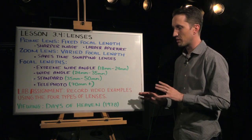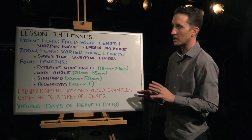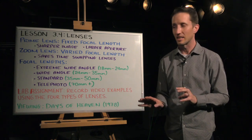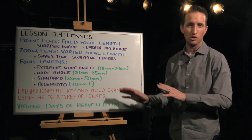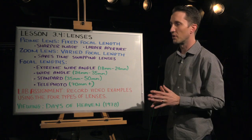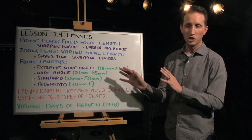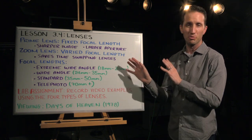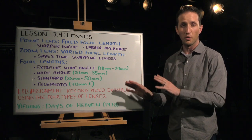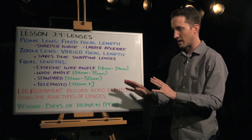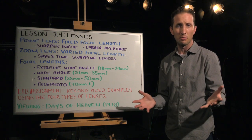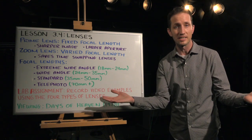So your lab assignment for this week is to record video examples using the four types of lenses that I discussed in this lecture: the extreme wide angle, the wide angle, the standard lens, and the telephoto. Now unfortunately, I do not have enough prime lenses for us to use for this lab assignment the way that it's written on the board. However, all of the cameras that we use have zoom lenses.